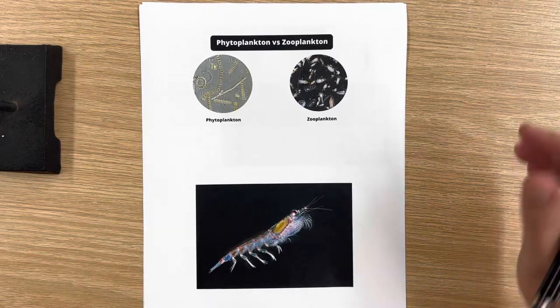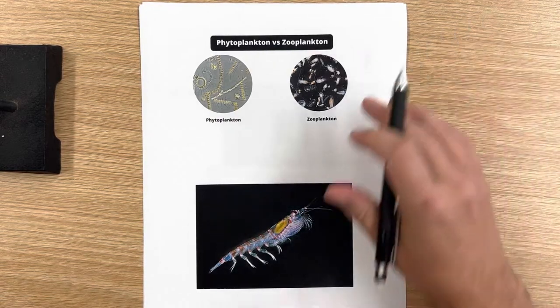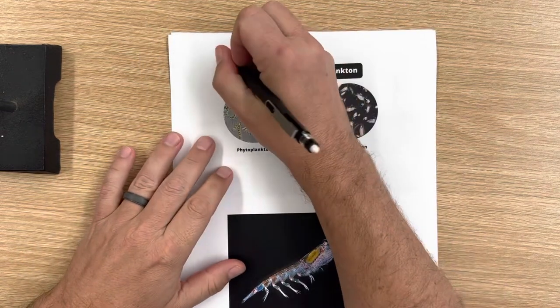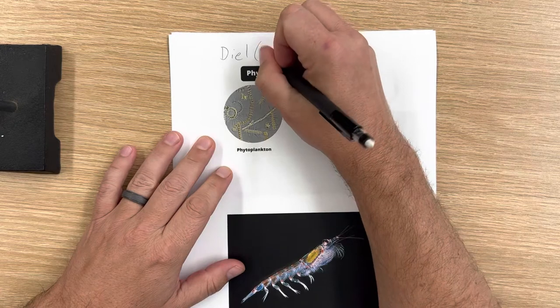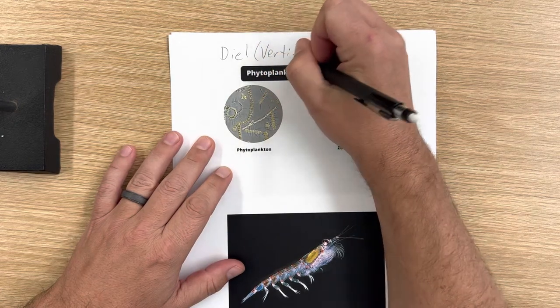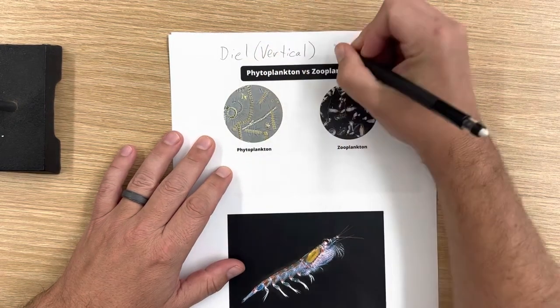Good morning. Today we're going to talk about something called diel migration or vertical migration.